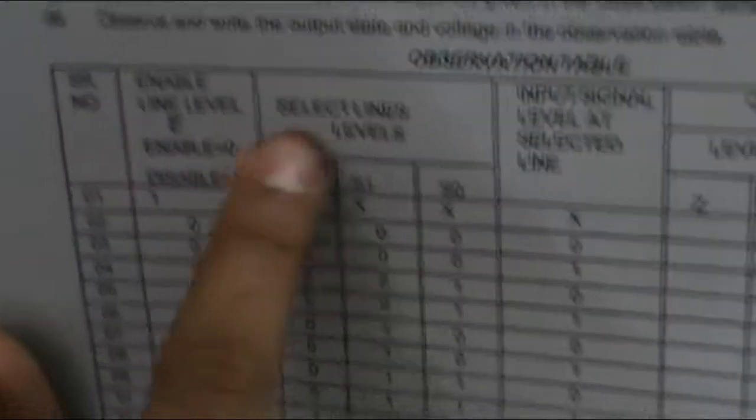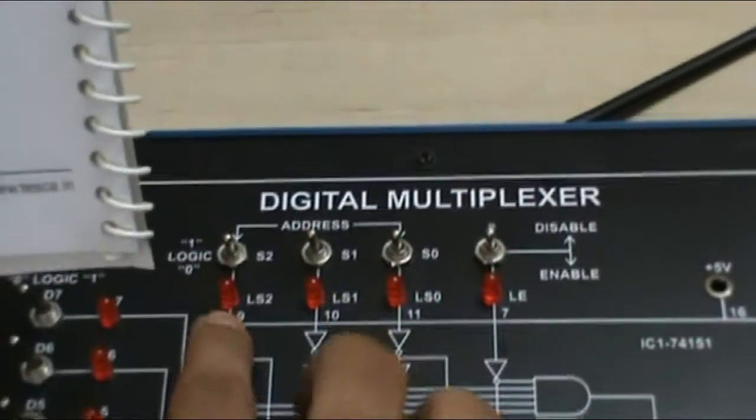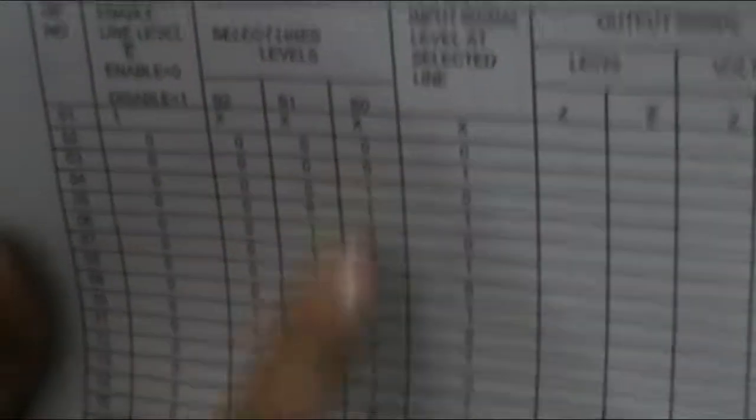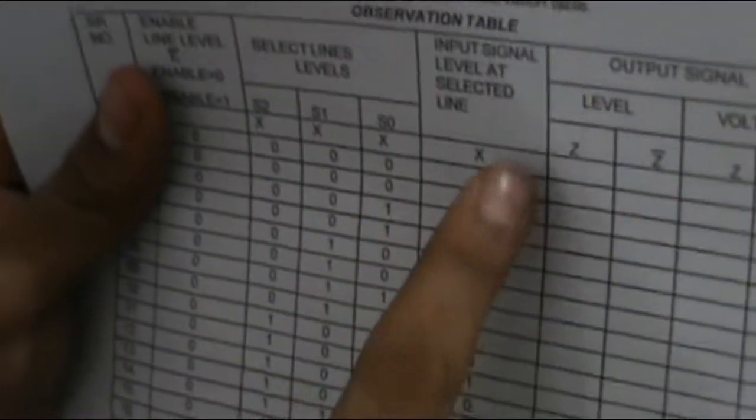We have to select these lines, select line levels which are these 3 select line levels S0, S1 and S2. We have to select it according to this table from 0 0 0 to 1 1 1. Now for each level we have to give 2 values which is of these lines D0 to D7.